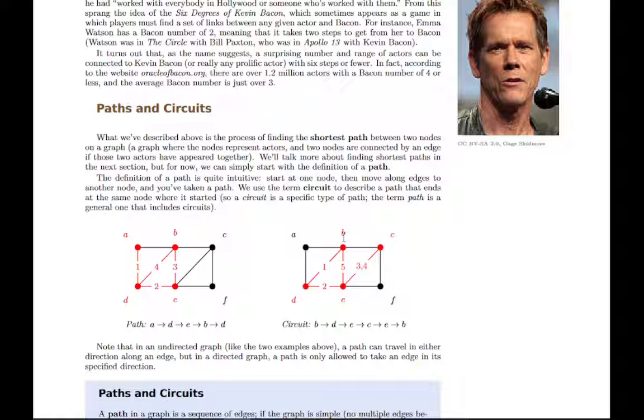So a circuit is a specific type of path. A path could be one that's a circuit or one that's not. It's a more general category.